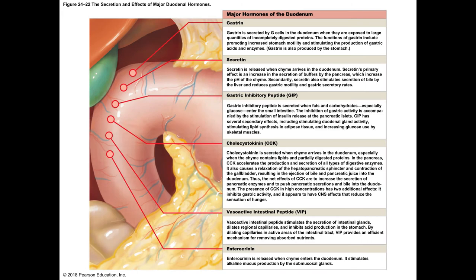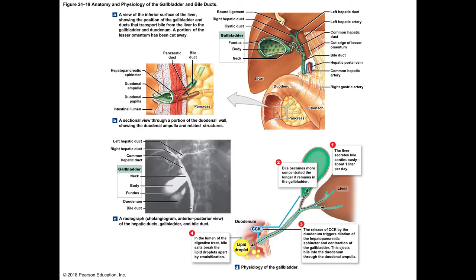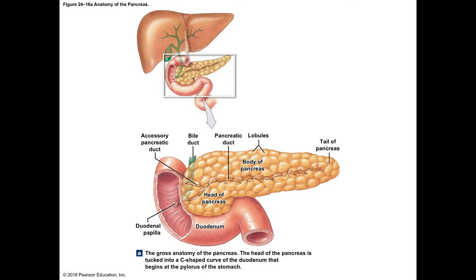Now let's look at the accessory structures that deposit substances into the duodenum. We'll start with the pancreas. Here's the duodenum; the pancreas sits right in that curve. The pancreas has a large duct running down its center. The majority of the pancreas's job — about 99% — is to release digestive enzymes as an exocrine organ. A very small but vital portion is releasing insulin and glucagon. The pancreatic ducts open into the duodenum.